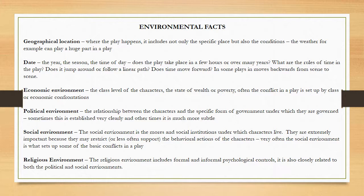So let's look more in depth at these three areas of given circumstances. First, the environmental facts. All plays establish the environment — the time and place of the action. Sometimes they're historically accurate and sometimes they're fantastical. But in almost all cases, even if the play moves around the globe or jumps around in time, they can be clearly located and defined. When we look at the environmental facts, we can think about six different areas. First, the geographical location — where the play happens, including not only the specific place but also the conditions, like weather.